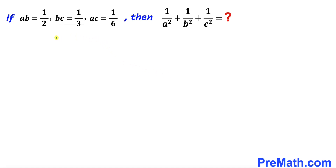In this video we have the system of equations: a times b equals 1/2, b times c equals 1/3, and a times c equals 1/6. Now we are going to solve for 1 divided by a squared plus 1 divided by b squared plus 1 divided by c squared.